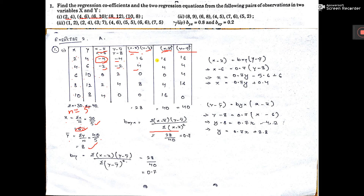Now (x minus x̄) whole square means this one squared. So minus 4 whole square means 16, minus 2 whole square means 4, and so on. And (y minus ȳ) whole square means this one squared — minus 4 squared means 16, and so on. Now if you add this column you get summation (x minus x̄) whole square, and if you add this you get summation (y minus ȳ) whole square.